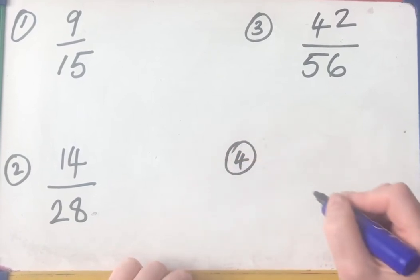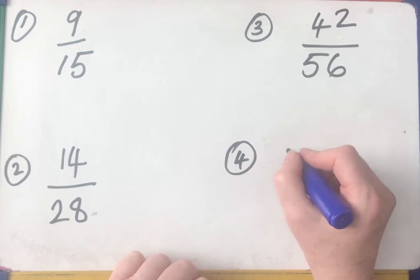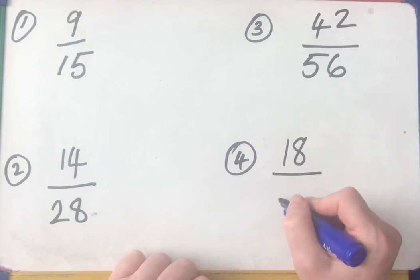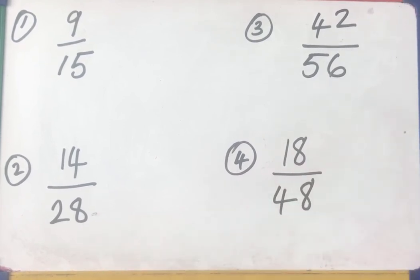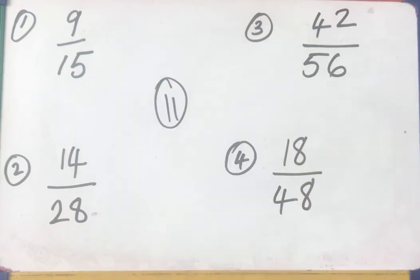Nasty one. And finally, number four, have a go at canceling down the fraction 18/48. Remember, it doesn't matter how many stepping stones you take. You might dive straight in because you know your times tables. You might have to do it in three or four jumps. Won't matter. Pause the video and have a go. Canceling down to their simplest form.